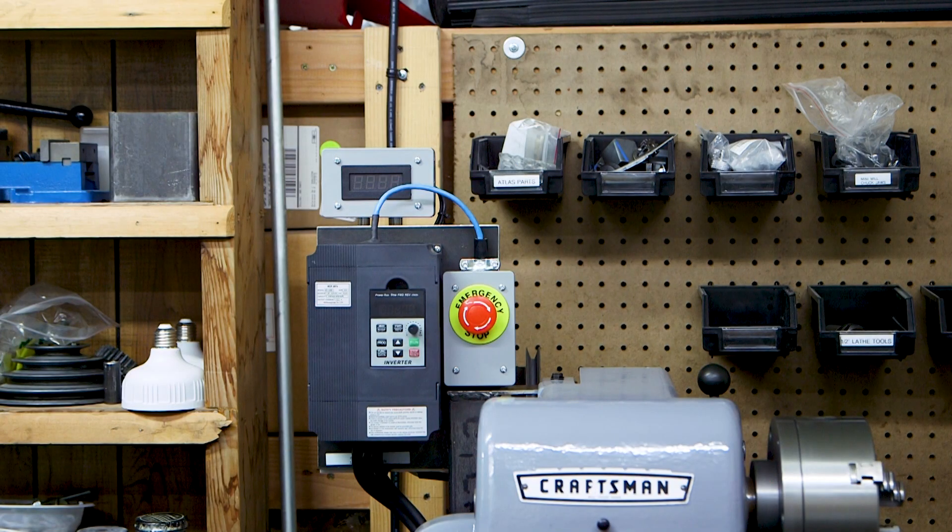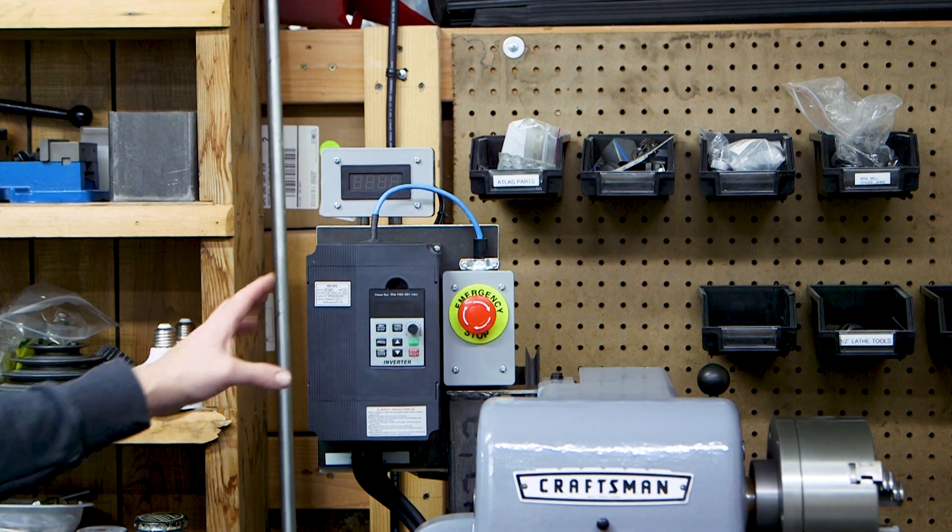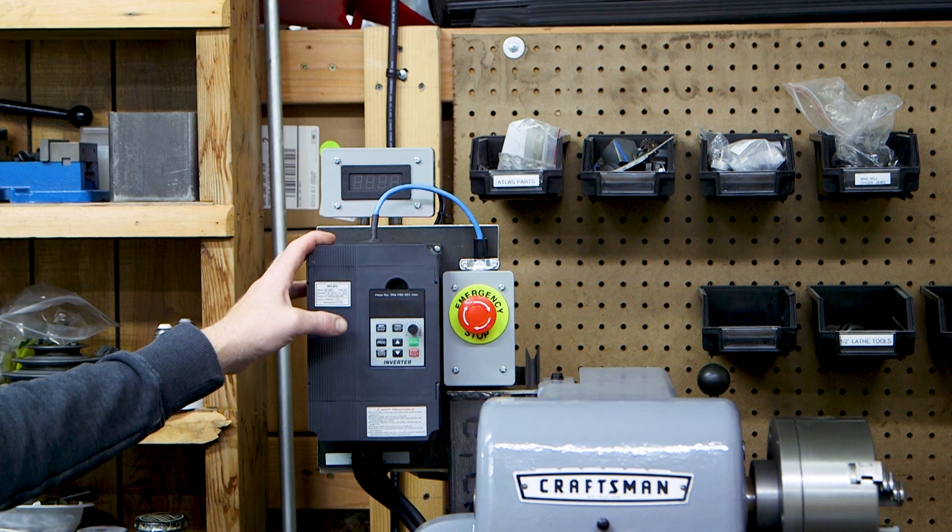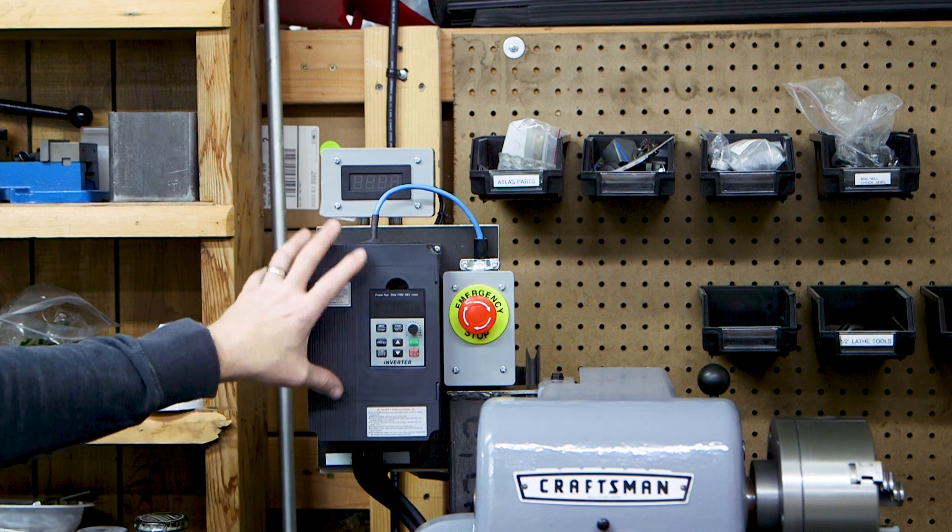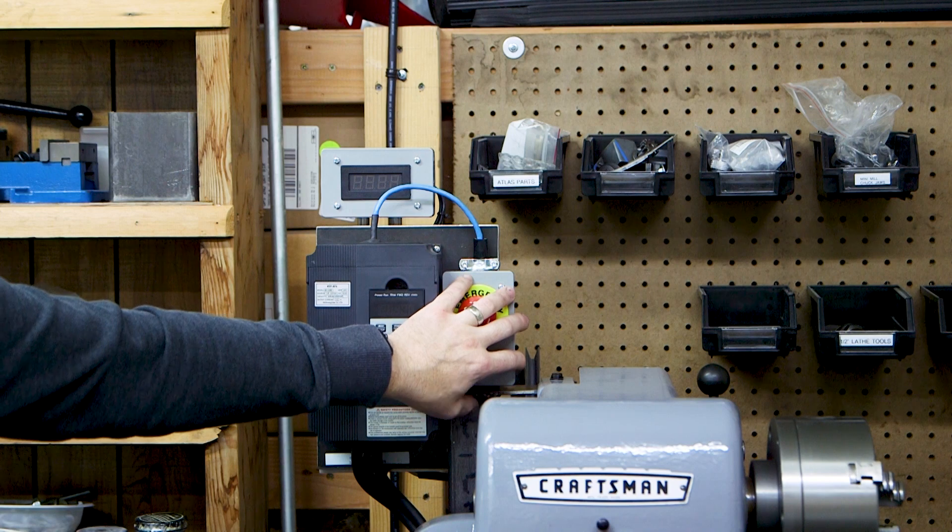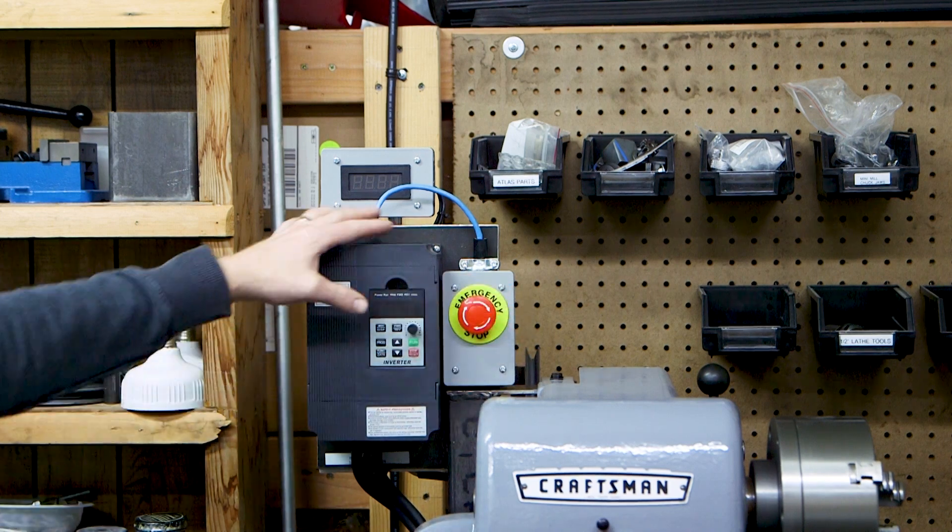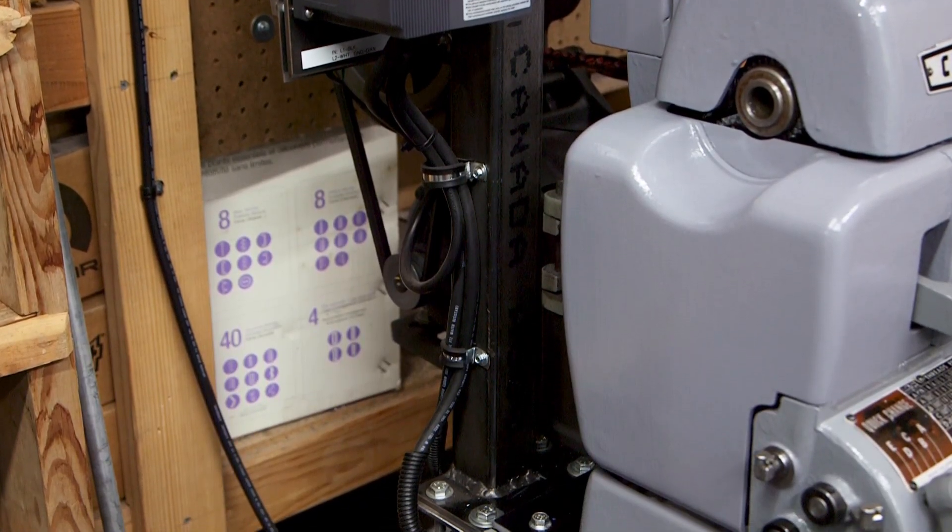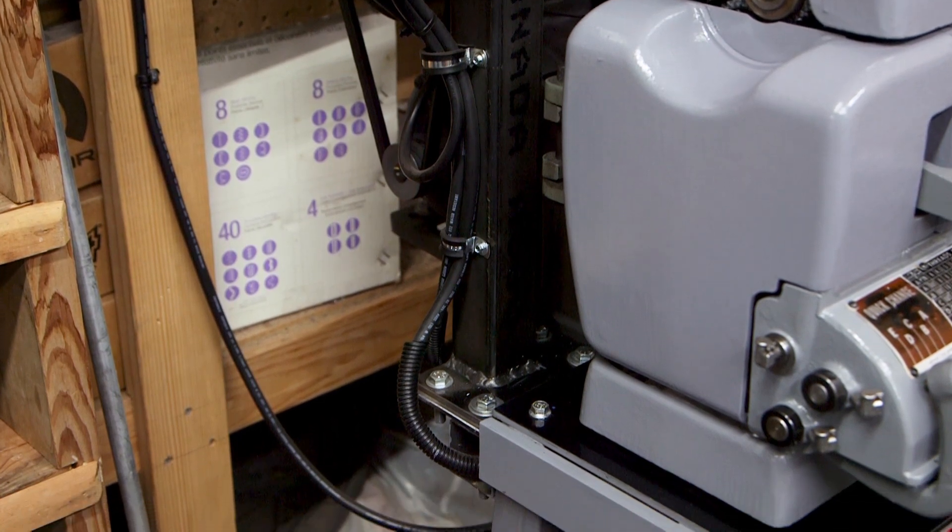This is the VFD I've installed on my Atlas lathe. I want to replicate this setup on the mill. So basically, I've got the VFD, a tachometer, and an emergency stop switch, and that's mounted on a stock. So this stock is bolted to the table, separate from the machine.